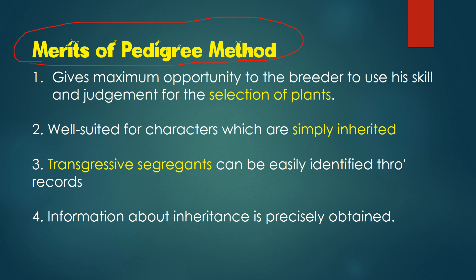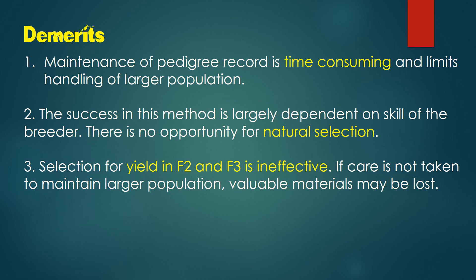Now for the merits of the pedigree method: it gives maximum opportunity to the breeder to use his skills and judgment for the selection of plants, and which group of plants you need can be traced from the pedigree charts. It is very well suited for characters that are simply inherited. Transgressive segregants — plants having extreme phenotypes like the highest-yielding varieties or the most disease-resistant varieties — can be easily identified through pedigree records. Information about resistance traits is also precisely obtained through pedigree methods.